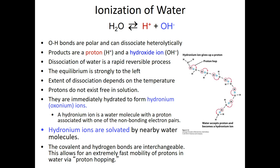Switching gears from structural applications of water, let's start thinking about ionization of water. When we consider the ionization of water, we're thinking about how a water molecule has the ability to dissociate into a proton and a hydroxide ion. A hydrogen atom is one electron and one proton. In dissociation, we take the electron away from the hydrogen atom, leaving just the proton, while the hydroxide ion is the oxygen with one hydrogen, the original two lone pairs, plus the electron from the dissociated hydrogen.